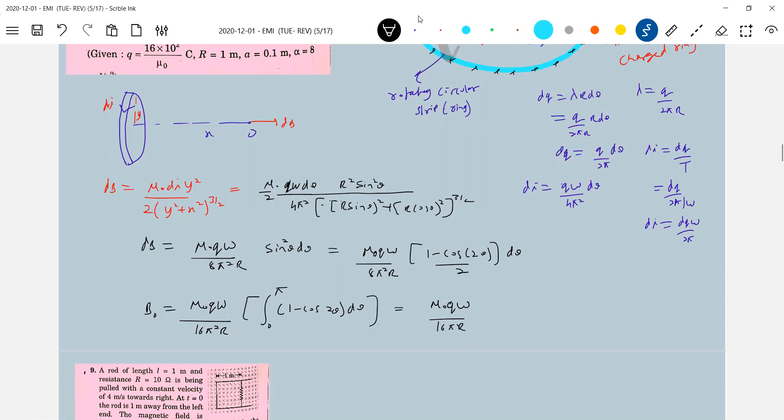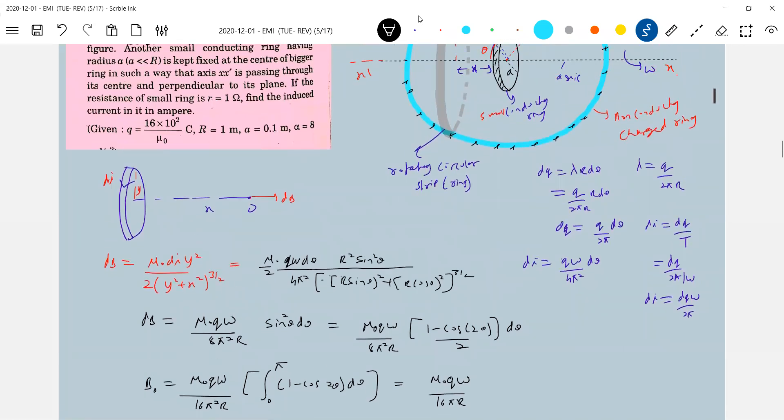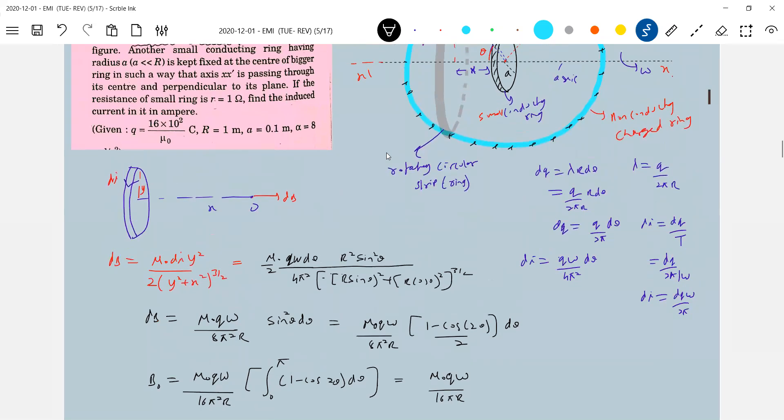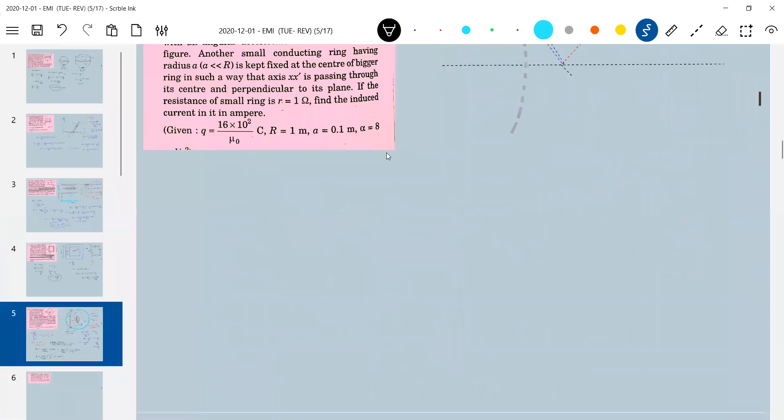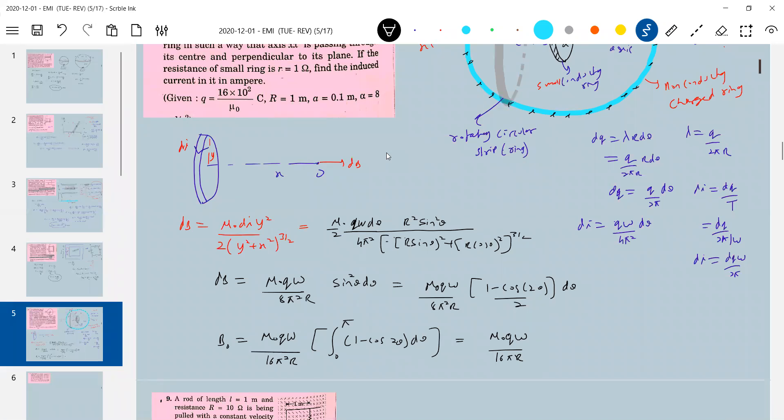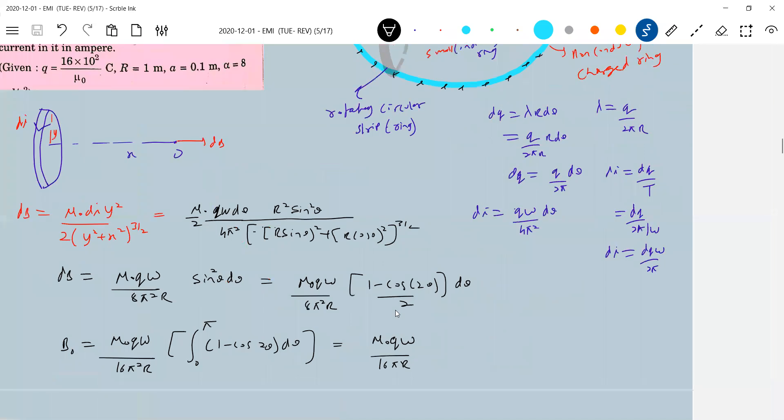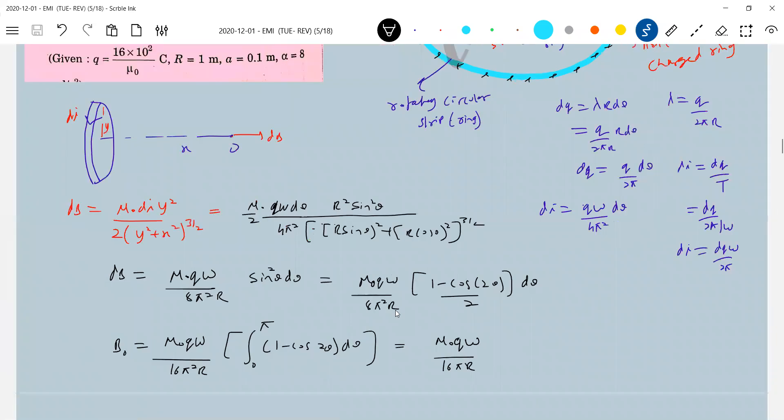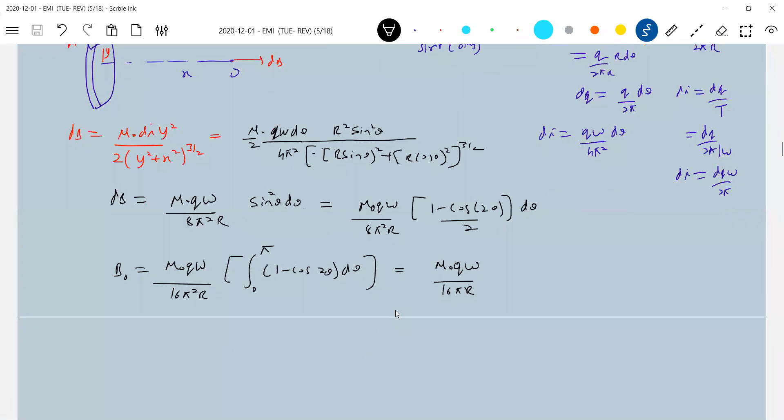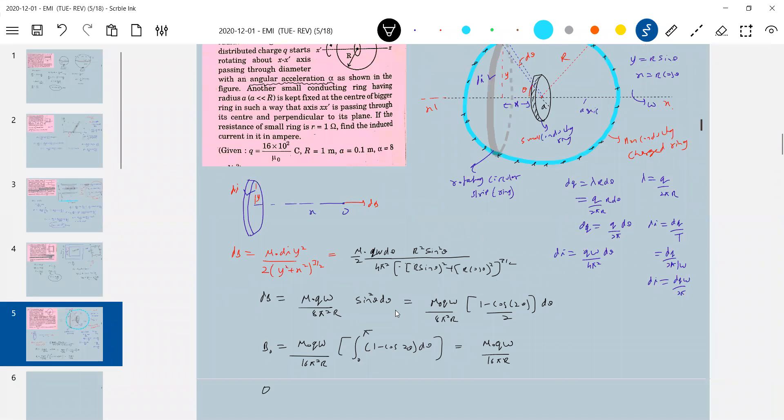Now flux linking, that we'll calculate. Find the induced current. I'll go for the next step, I'll have one more page. We'll calculate the flux. So flux linking will be B naught into pi a square.